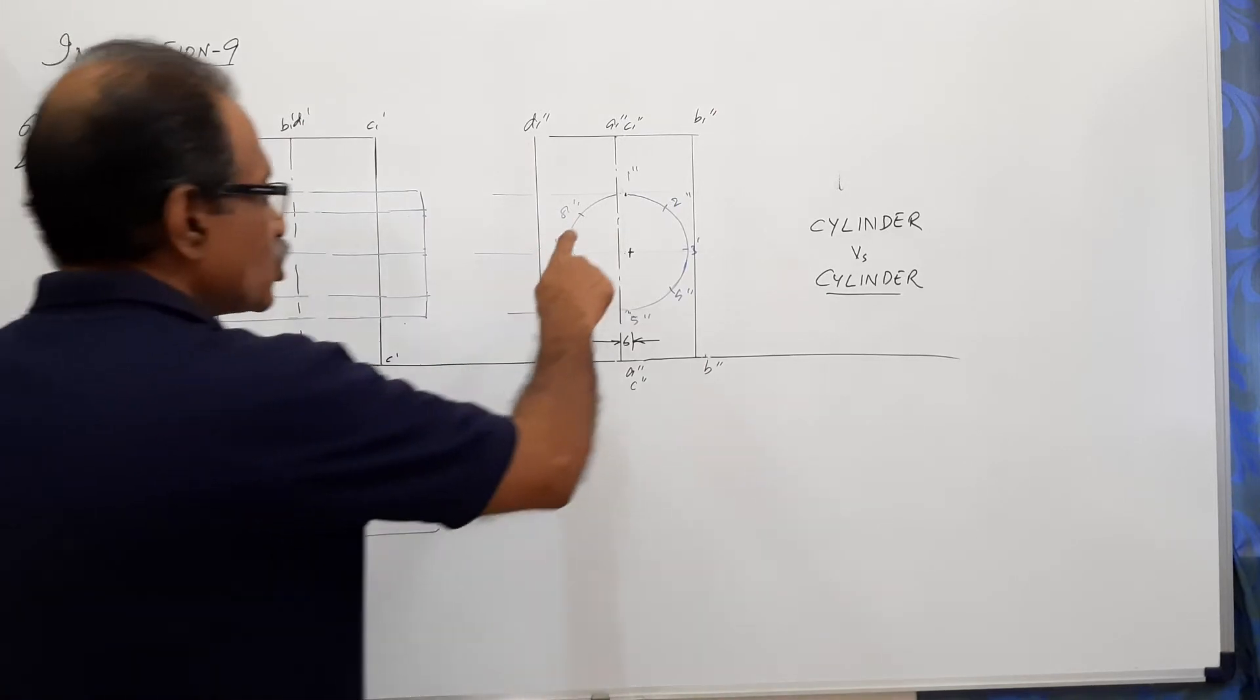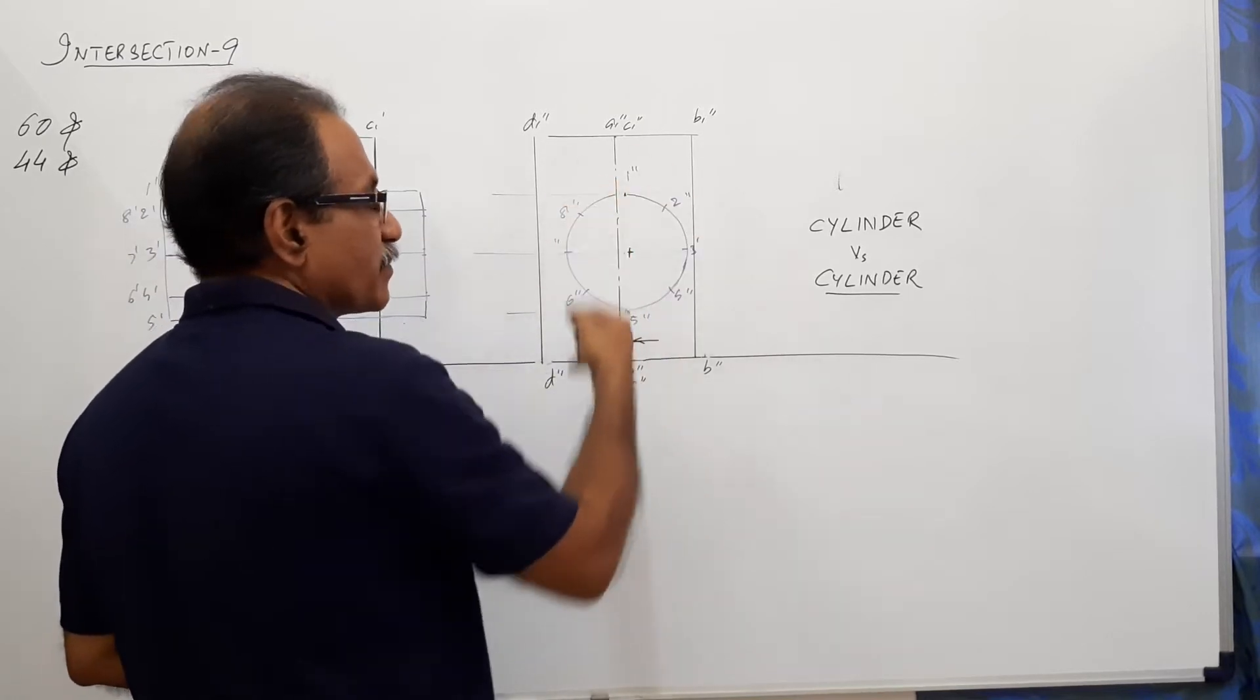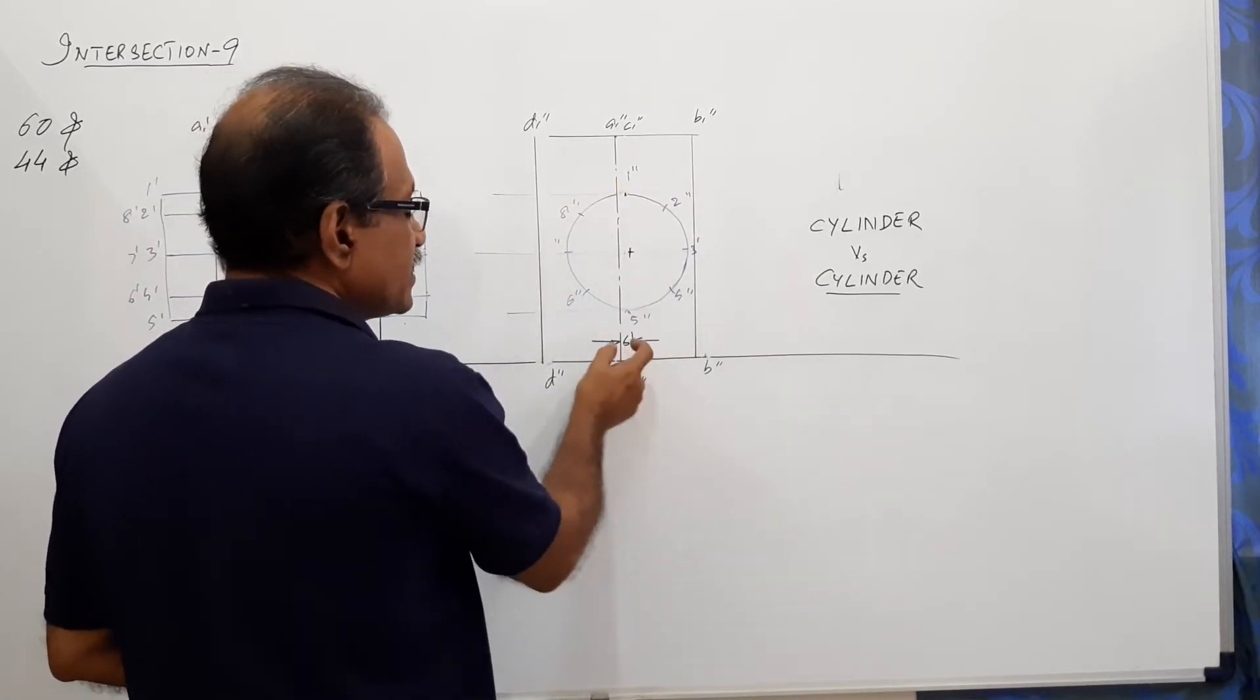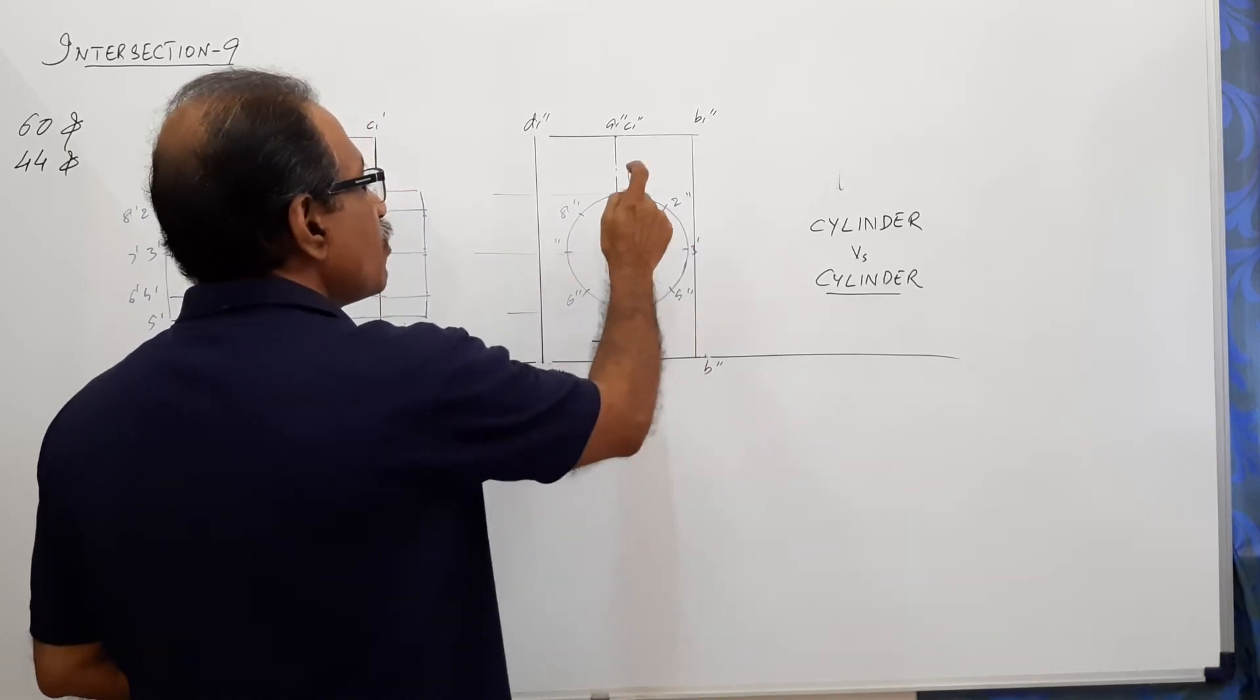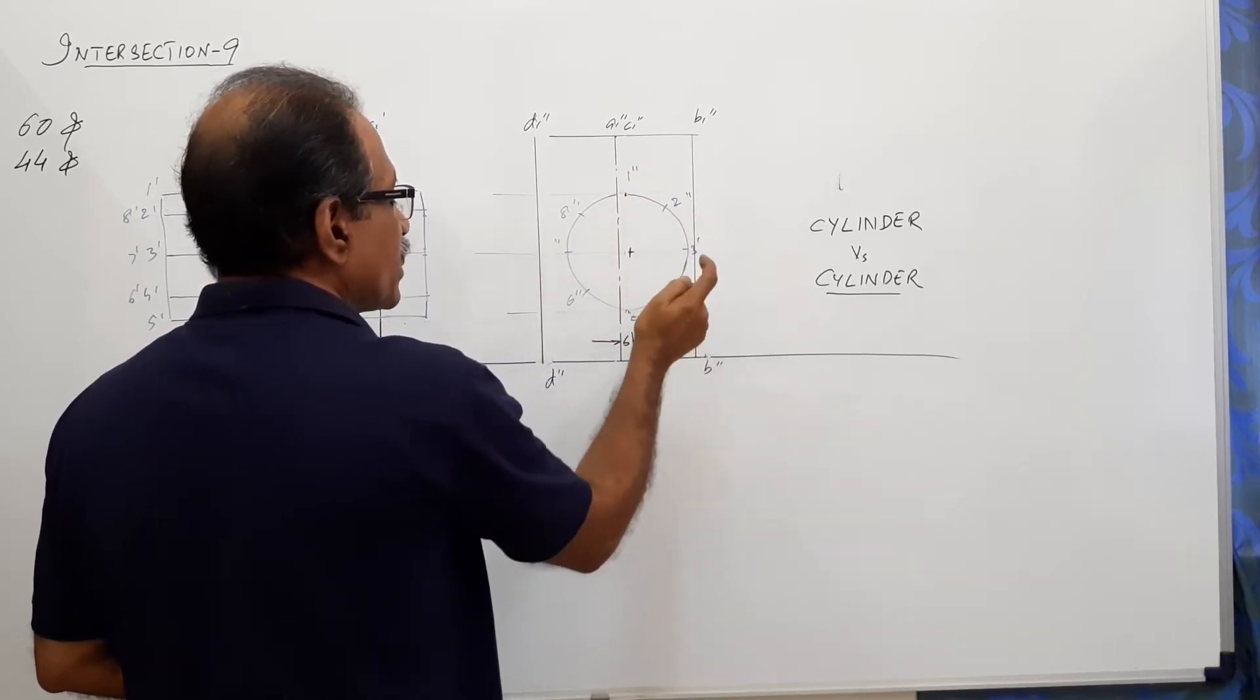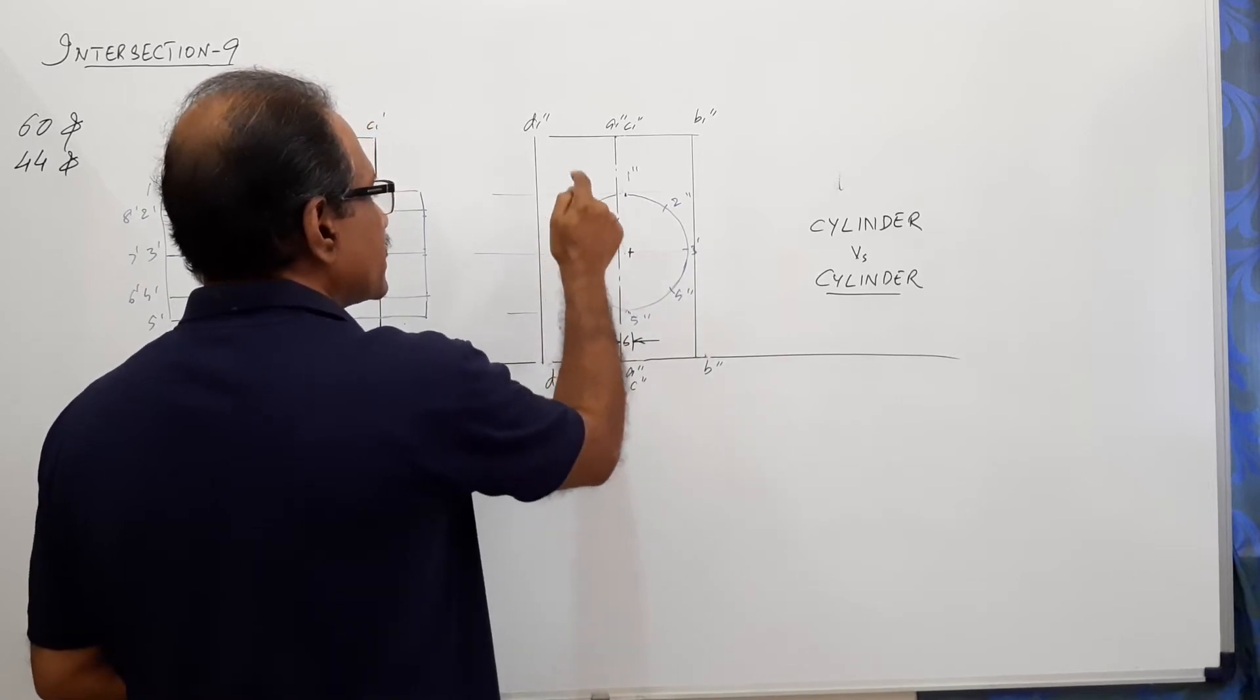Now, let us draw the penetrating cylinder 44 mm diameter. The distance is 6 mm. The gap distance between the two cylinders axis is 6 mm. So, draw the circuit. 1 W dash, 2 double dash, 3 double dash, 4 double dash, 5 double dash, 6 double dash, 7 double dash and 8 double dash.